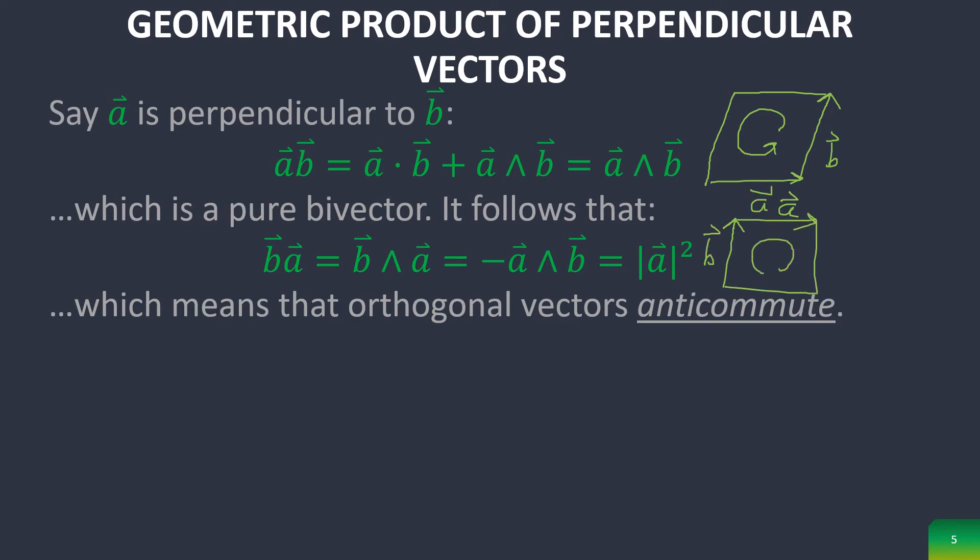It has an opposite orientation, which ends up being the negative sign. I don't know why this is here. That's not actually supposed to be there. But anyway, this means that the orthogonal vectors are anti-commuting.